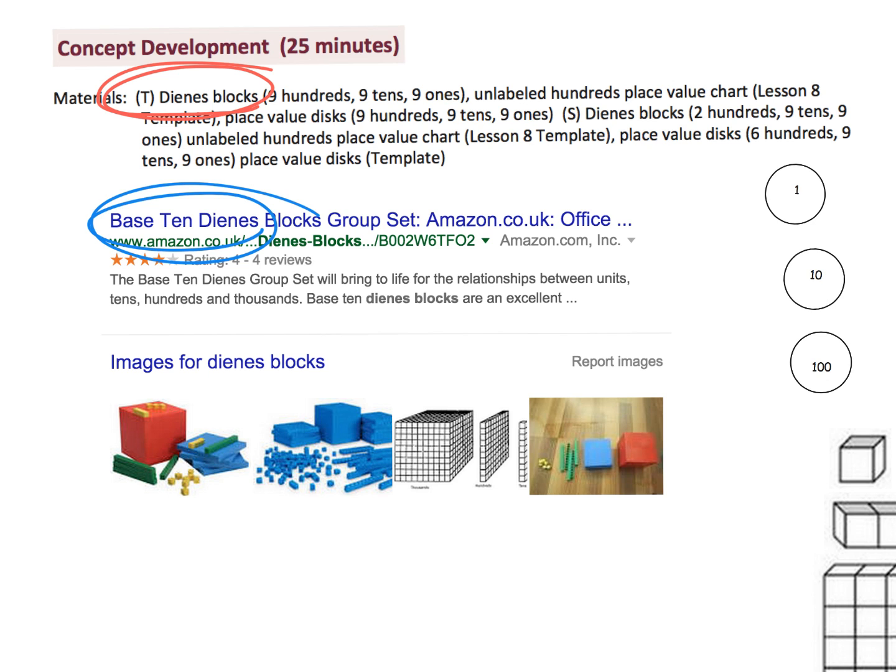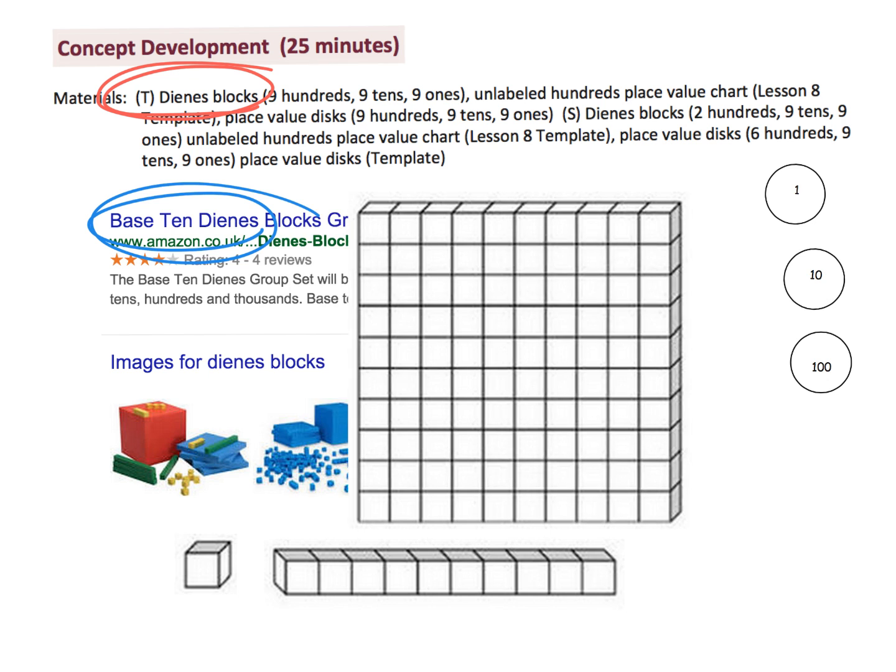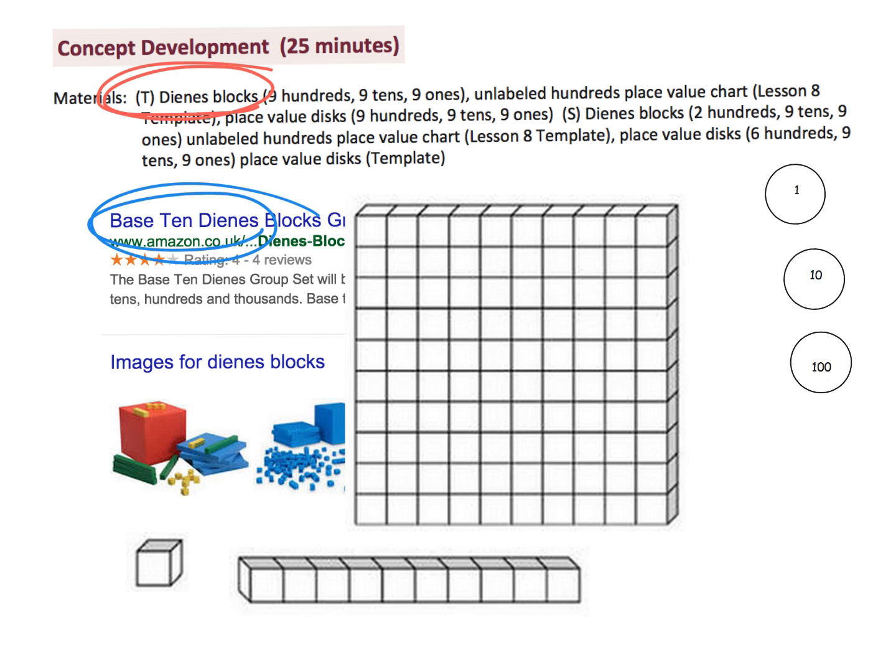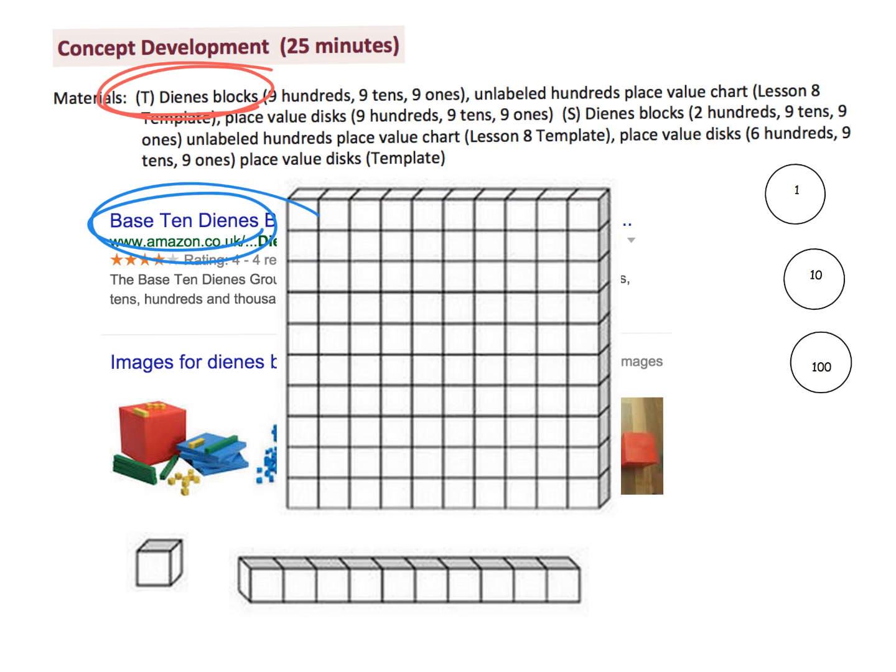Now here's the deal with the base 10 blocks. You get these things - that's a unit, that's a 10, and then here's a hundred. So it takes ten tens to equal a hundred and it takes ten ones to equal a ten. And you get a sense of this relative scale, this relative size, right?